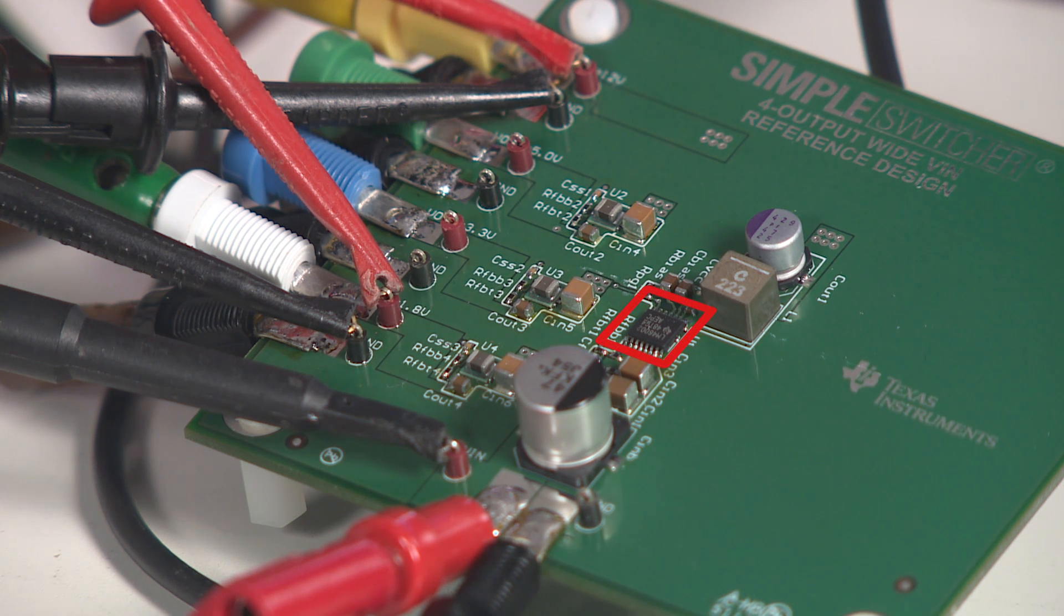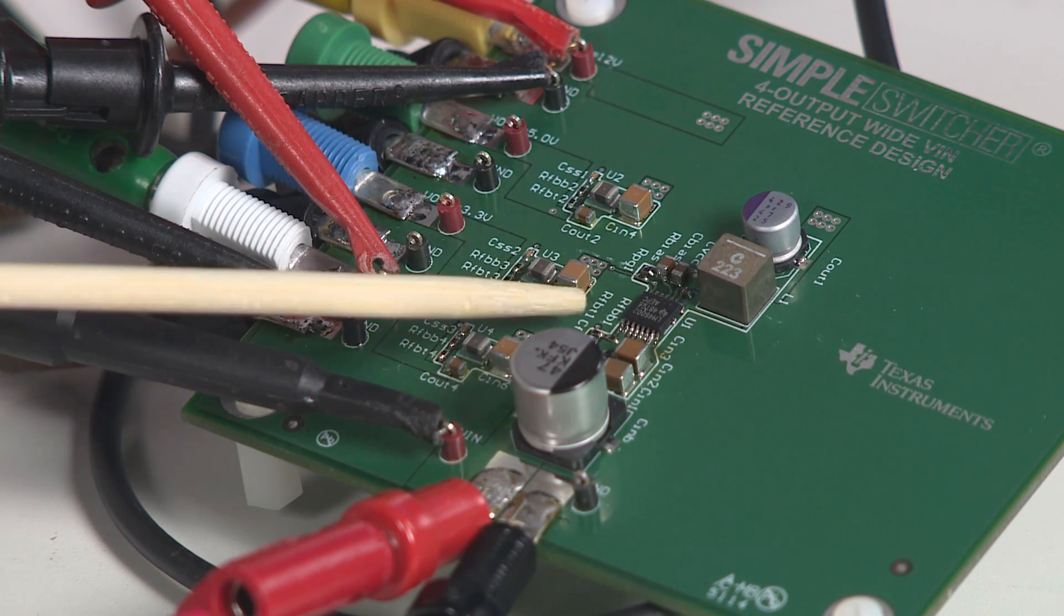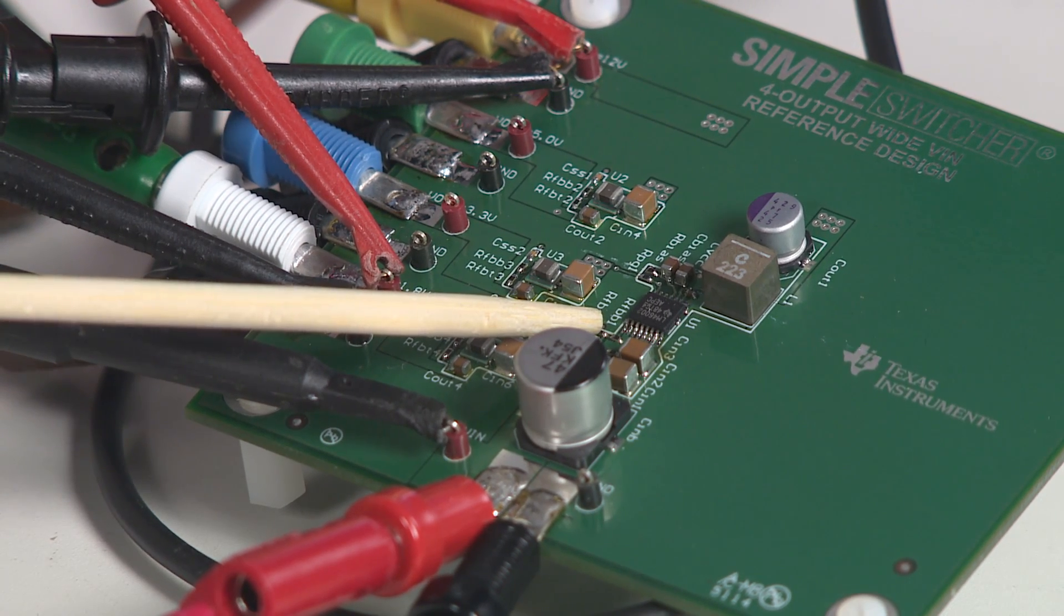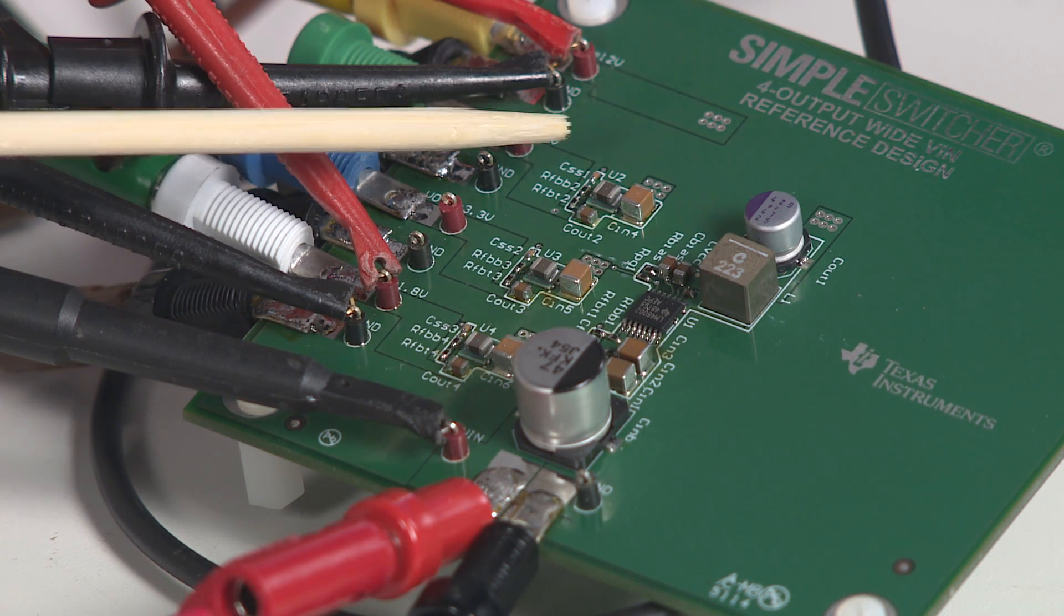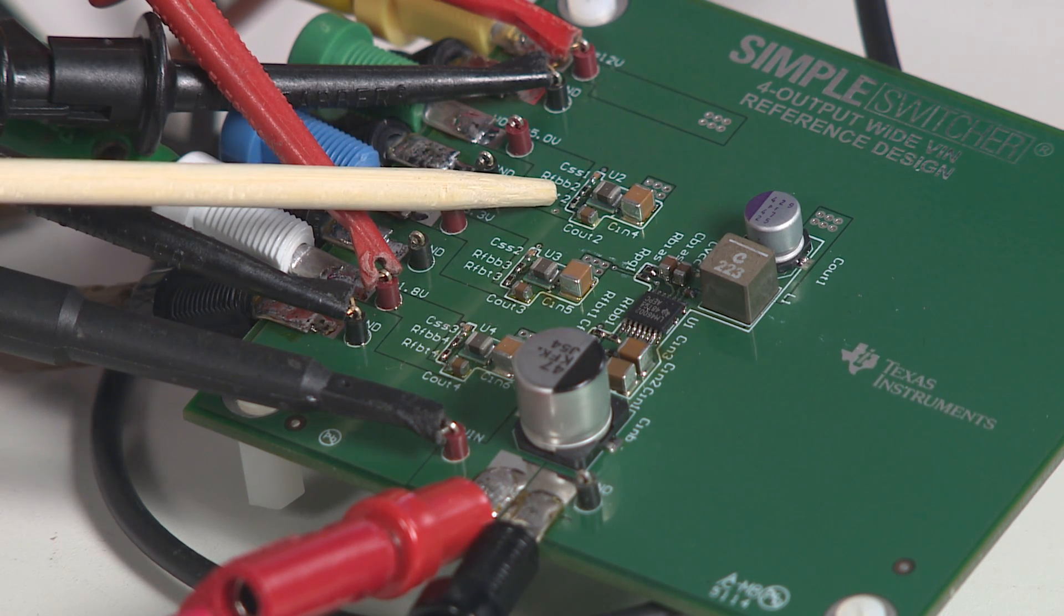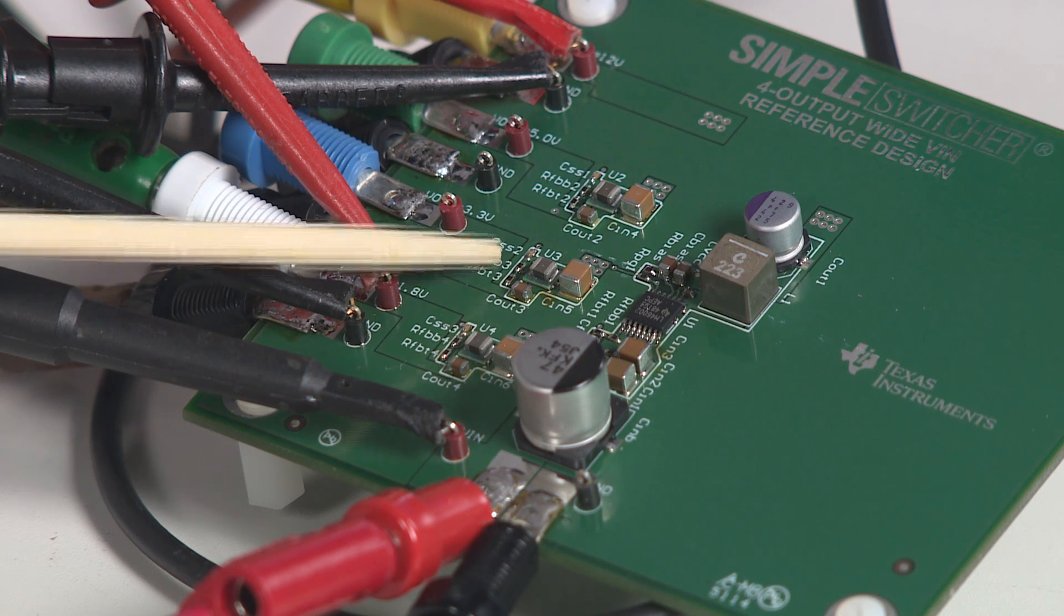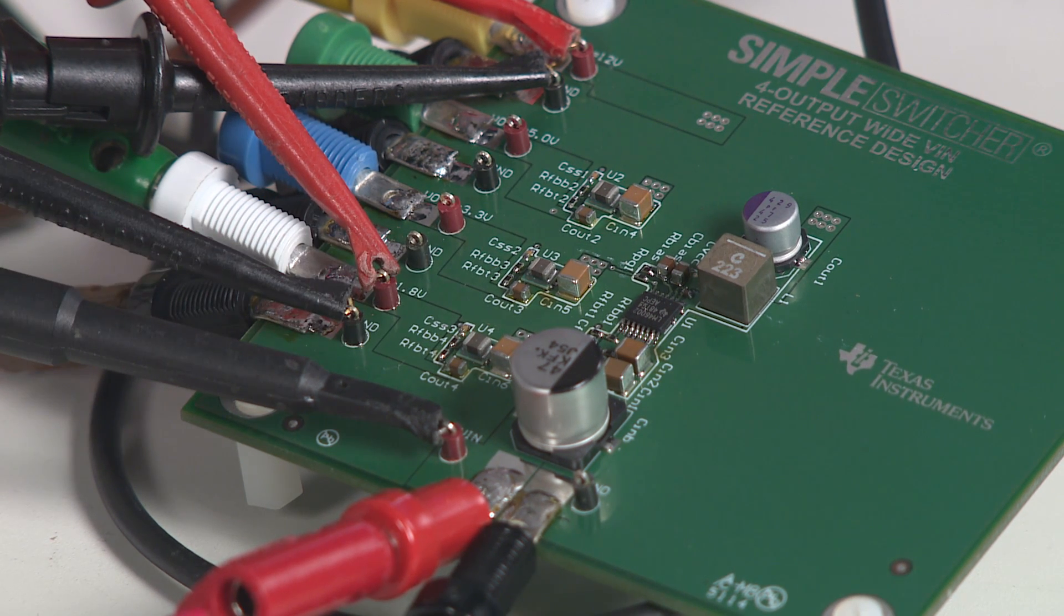It uses the LM46002 60 volt 2 amp synchronous buck regulator and three LMZ21701 17 volt 1 amp nano modules. Now the LM46002 accepts input voltages up to 60 volts and regulates this down to 12 volts. The LMZ21701s further step this down to 5 volt, 3.3 volt, and 1.8 volt, which is very common in many industrial systems.